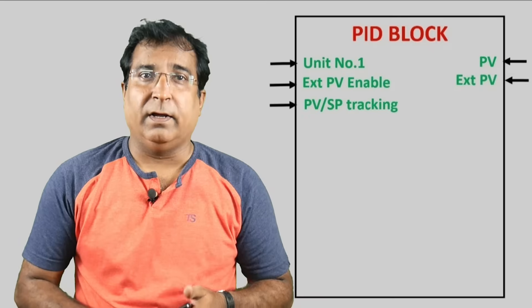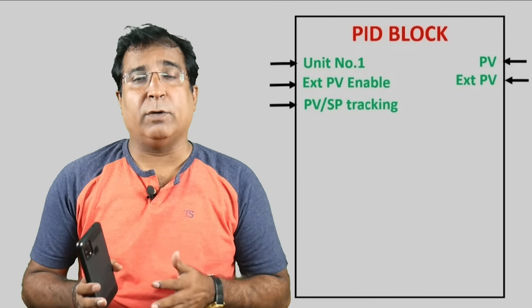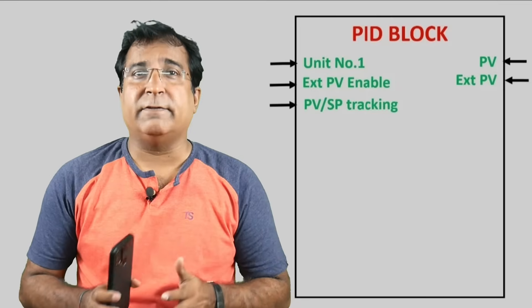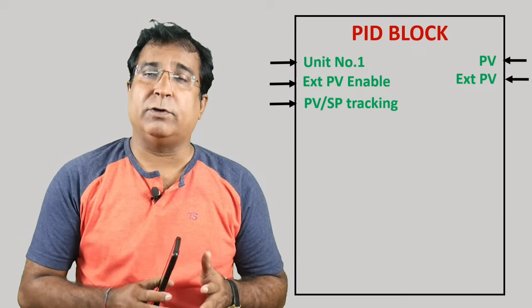PV tracking. If this bit is kept at logical one, then in manual mode setpoint will track process value. This will ensure a bumpless transfer the moment controller is switched from manual to auto.